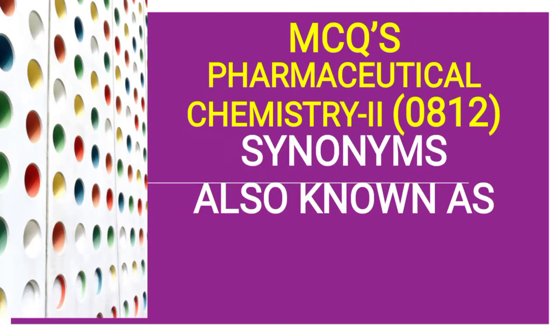Hello dear learners, today we are going to talk about the MCQs from Pharmaceutical Chemistry 2, subject code 0812. We are going to talk about the untouched part of Pharmaceutical Chemistry 2, that is about synonyms — also known as type of questions. There are many drugs known by two or three names, and we get confused in exams. For example, Nicethamide is also known as Coramine. These are the untouched parts we will cover today, starting with synonyms Part 1.